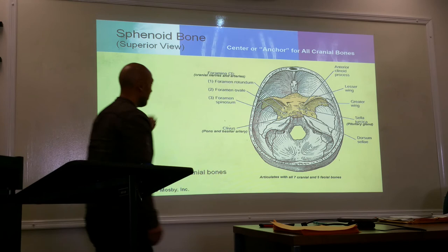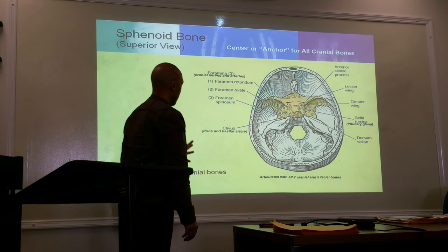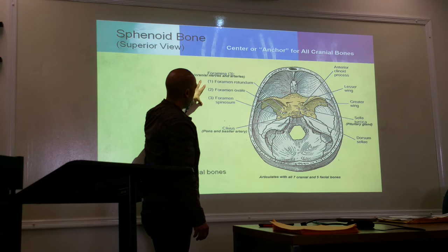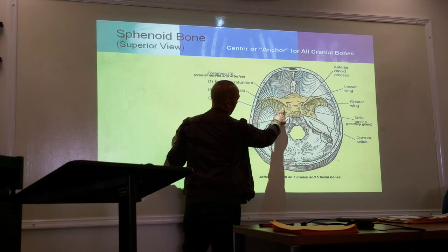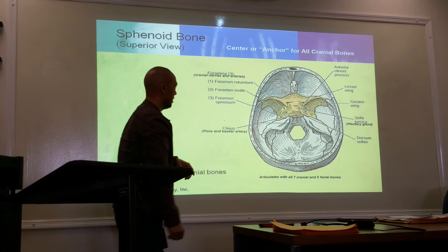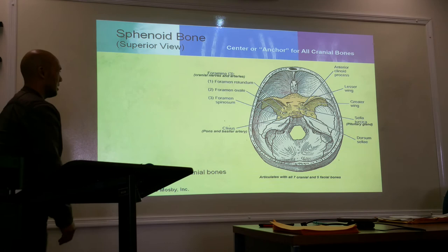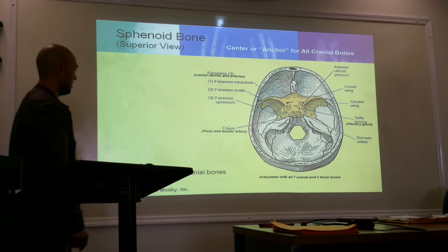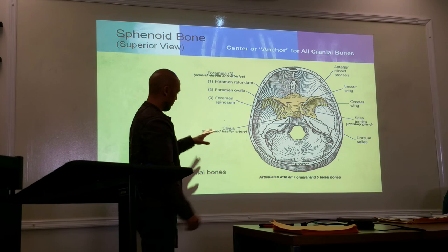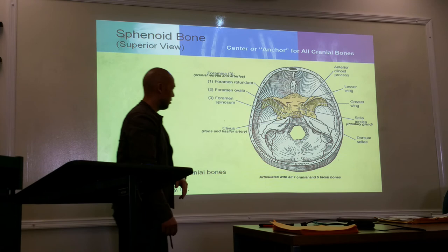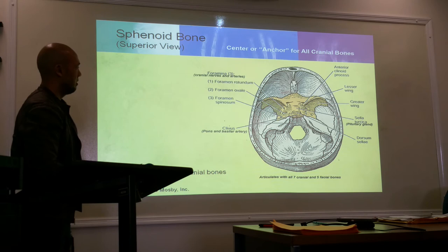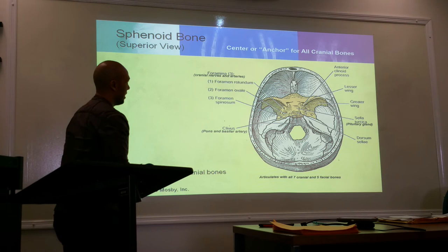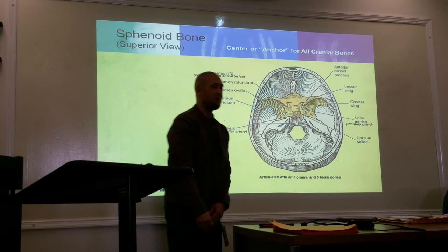The sphenoid has three foramina that allow passage for cranial nerves and arteries. From medial to lateral: the foramen rotundum (most medial), the foramen ovale, and the foramen spinosum. The sphenoid bone anchors all cranial bones, articulating with all seven cranial bones as well as five facial bones.